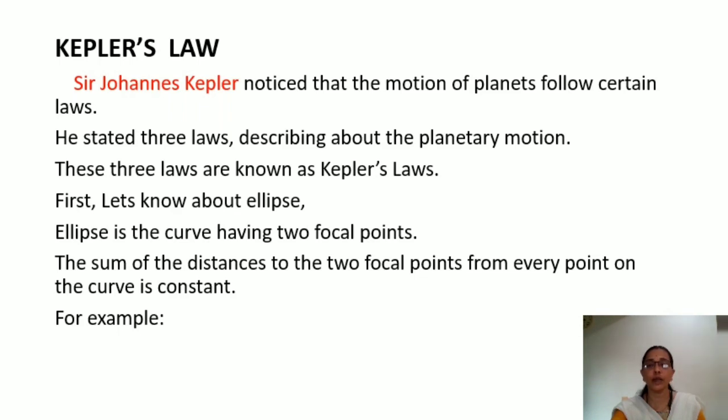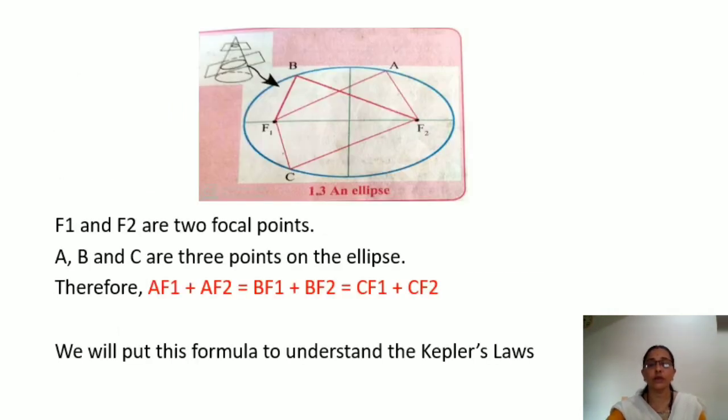First, let's know what ellipse is. Ellipse is a curve having two focal points. The sum of the distances to the two focal points from every point on the curve is constant. For example, this figure is taken from your textbook. You could see an ellipse and the two focal points that is F1 and F2. Points A, B and C are on the ellipse.